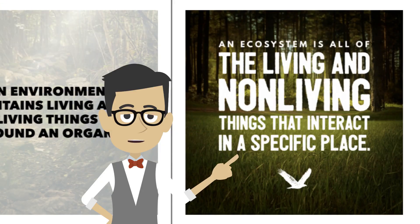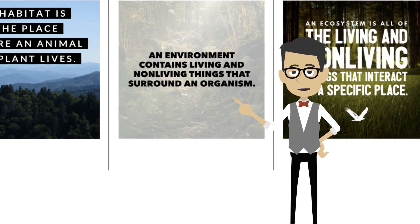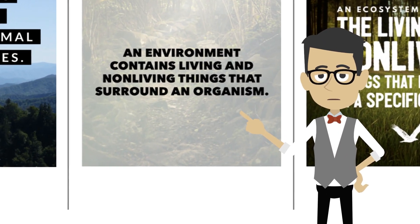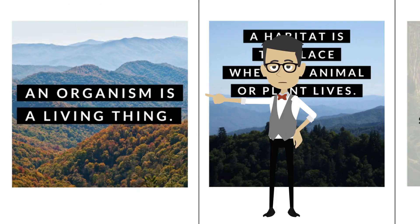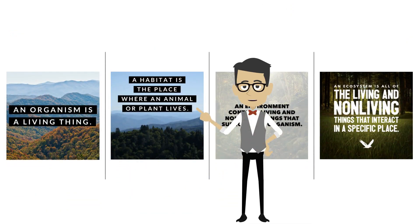An ecosystem is all the living and non-living things that interact in a specific place. An environment contains living and non-living things that surround an organism. An organism is a living thing. And a habitat is the place where an animal or plant lives.